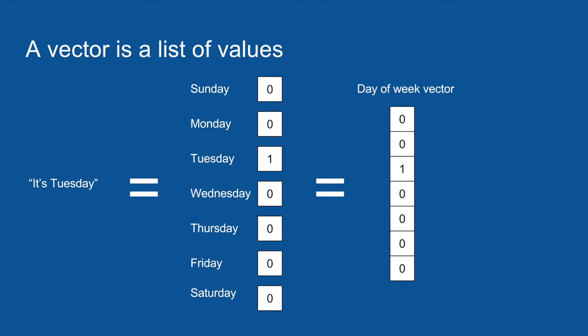The reason vectors are useful is that lists of numbers are the computer's native language. If you want to get something into a format that's natural for a computer to compute, to do operations on, to do statistical machine learning, lists of numbers are the way to go. Everything gets reduced to a list of numbers before it goes through an algorithm. We can also have a vector for statements like 'it's Tuesday.'